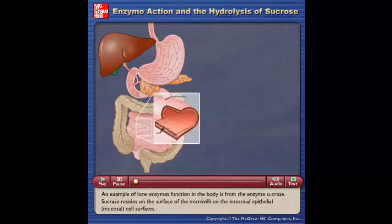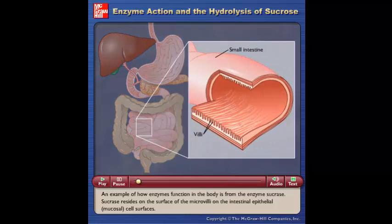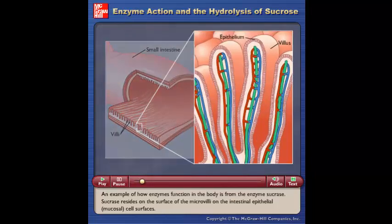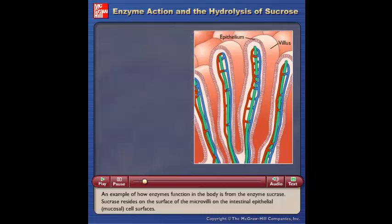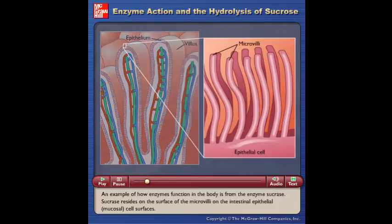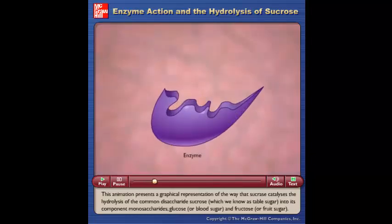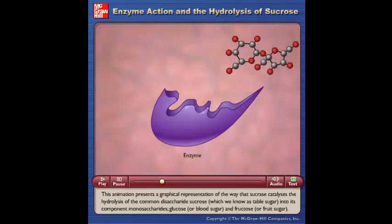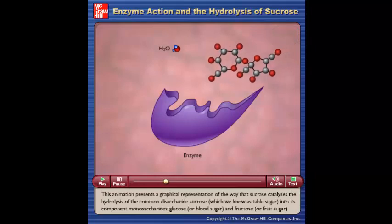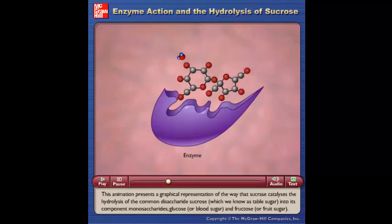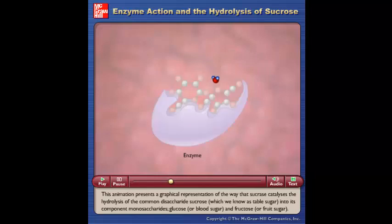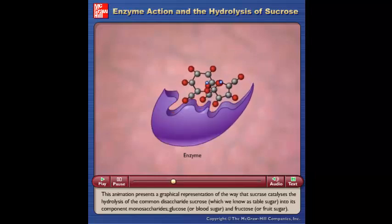An example of how enzymes function in the body is from the enzyme sucrase. Sucrase resides on the surface of the microvilli on the intestinal epithelial mucosal cell surfaces. This animation presents a graphical representation of the way that sucrase catalyzes the hydrolysis of the common disaccharide sucrose, which we know as table sugar, into its component monosaccharides, glucose or blood sugar, and fructose or fruit sugar.